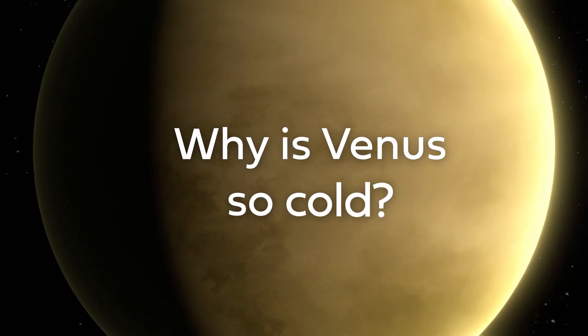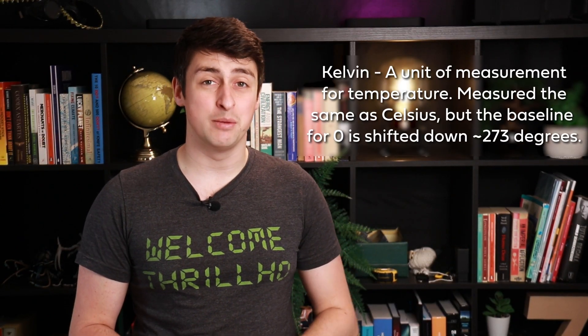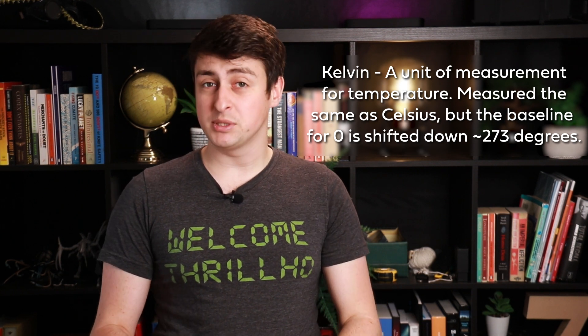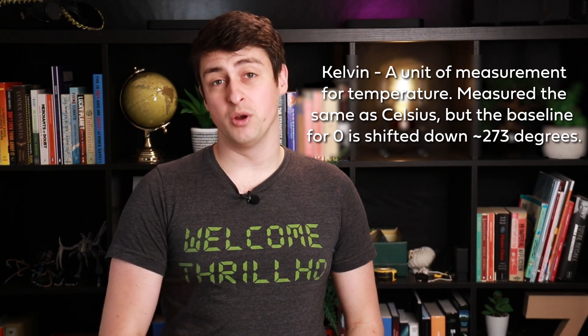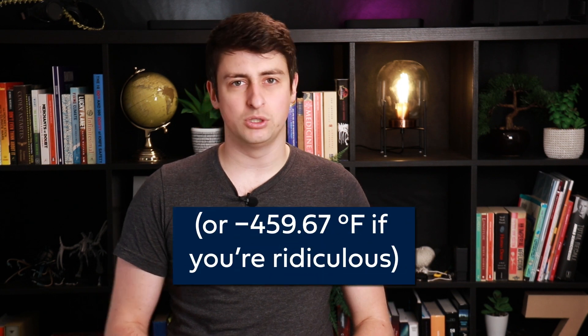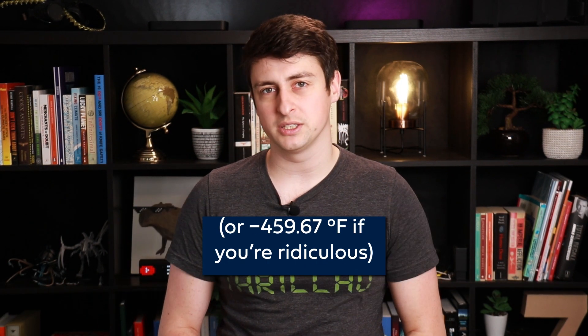To work out why this is, we need to look at why Venus is the temperature it is, and work out why Venus is so cold. First of all, we quickly need to define a unit called a Kelvin, which is exactly the same as a degree Celsius, except absolute zero is zero Kelvin, rather than minus 273.15-ish degrees Celsius. Kelvin is a measurement of absolute temperature, or in other words, how hot something is relative to absolute zero.